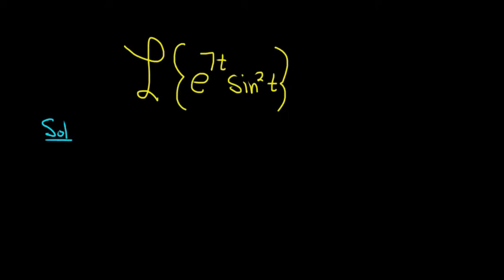So we have an e times something we can compute the Laplace transform of. Basically we'll rewrite this using identities and then use the shifting theorem.